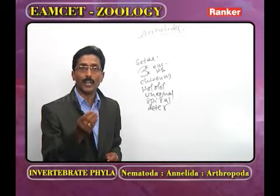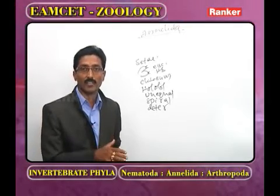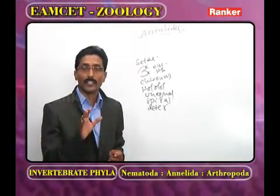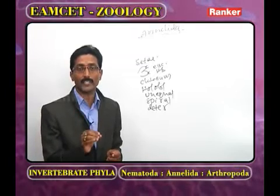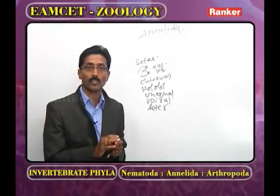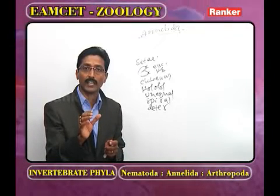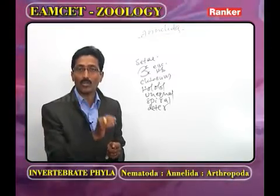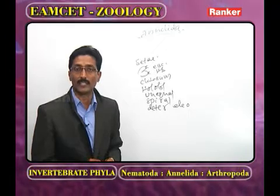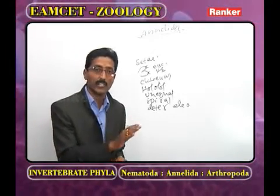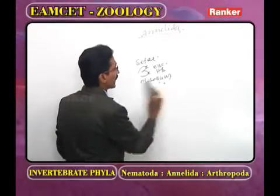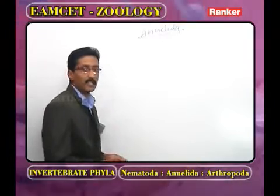In all annelids, the main excretory organs are nephridia, which perform osmoregulation, excretion, and reabsorption of water. In addition, chloragogen cells also perform excretion. Nephridia are derived from ectoderm, whereas chloragogen cells are derived from mesoderm. Free chloragogen cells are called eleocytes — chloragogen cells are stationary, whereas eleocytes are free-moving.